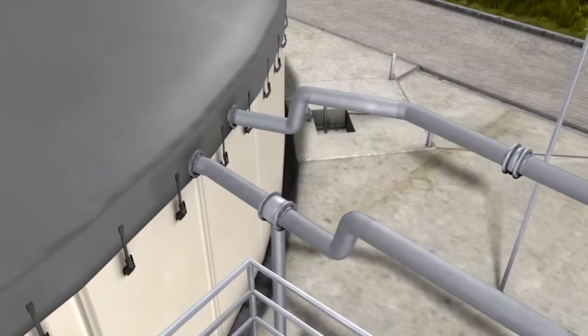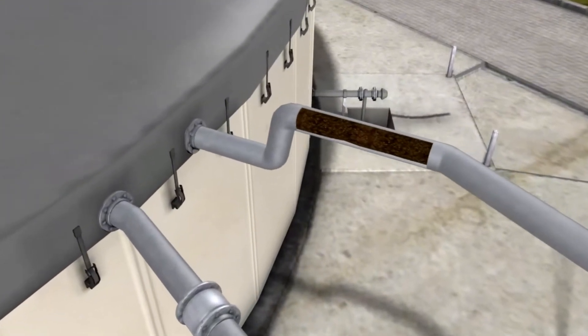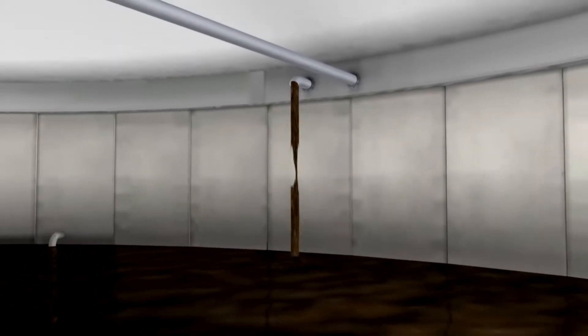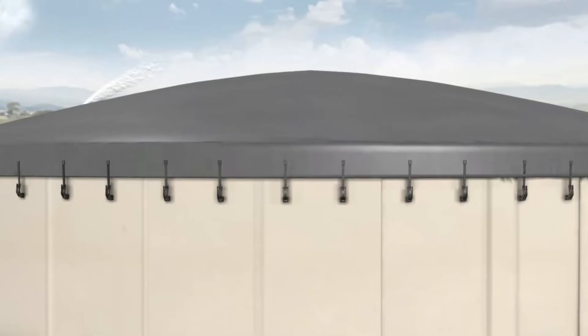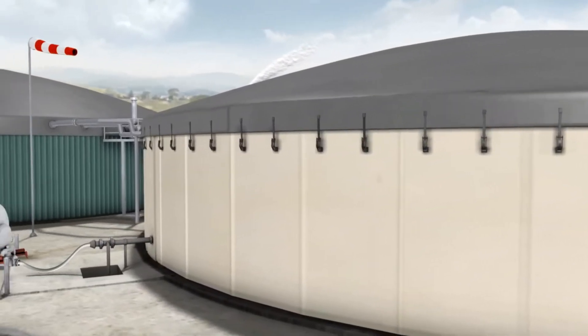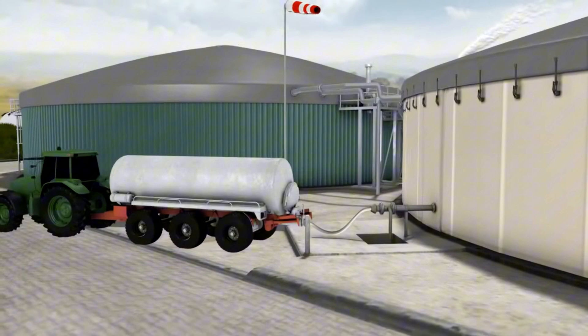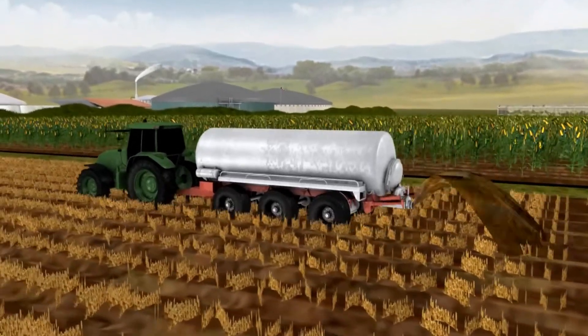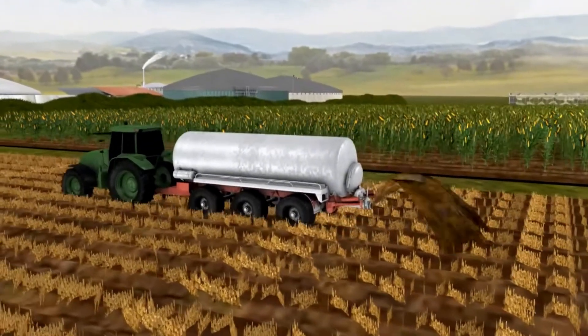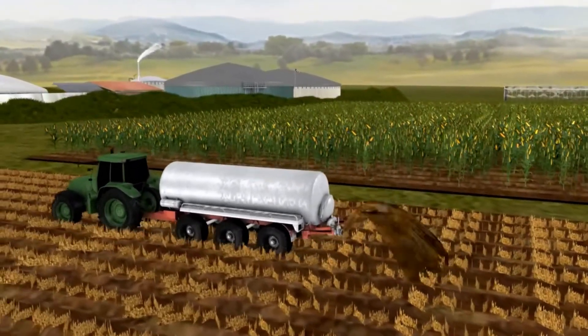The material which is fermented out, the so-called digestate, enters the digestate storage through an overflow line. This container is also equipped with a height-adjustable stirring unit and in Germany comes with a gas-tight roof as standard. The material is stored here and can be used at a later time as a high-quality, nearly odourless fertilizer. All organic acids were decomposed during the fermentation process. In doing so, the nutrients remain fully intact and can be better absorbed by the plants.